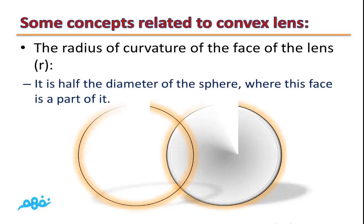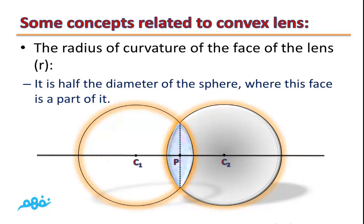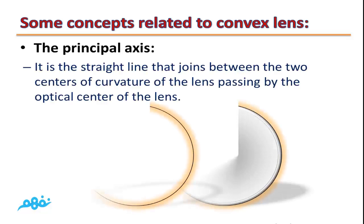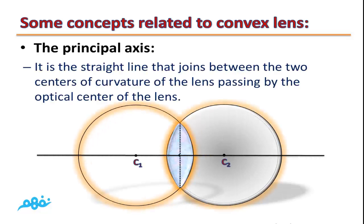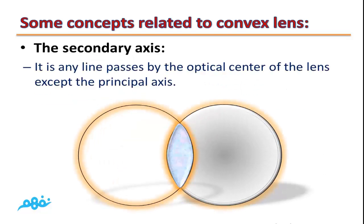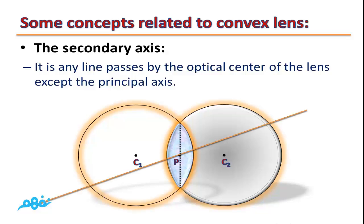Third, the radius of curvature of the face of the lens (R): it is half the diameter of the sphere of which this face is a part. The principal axis: it is the straight line joining the two centers of curvature of the lens, passing through the optical center. The secondary axis: it is any line that passes through the optical center of the lens except the principal axis.